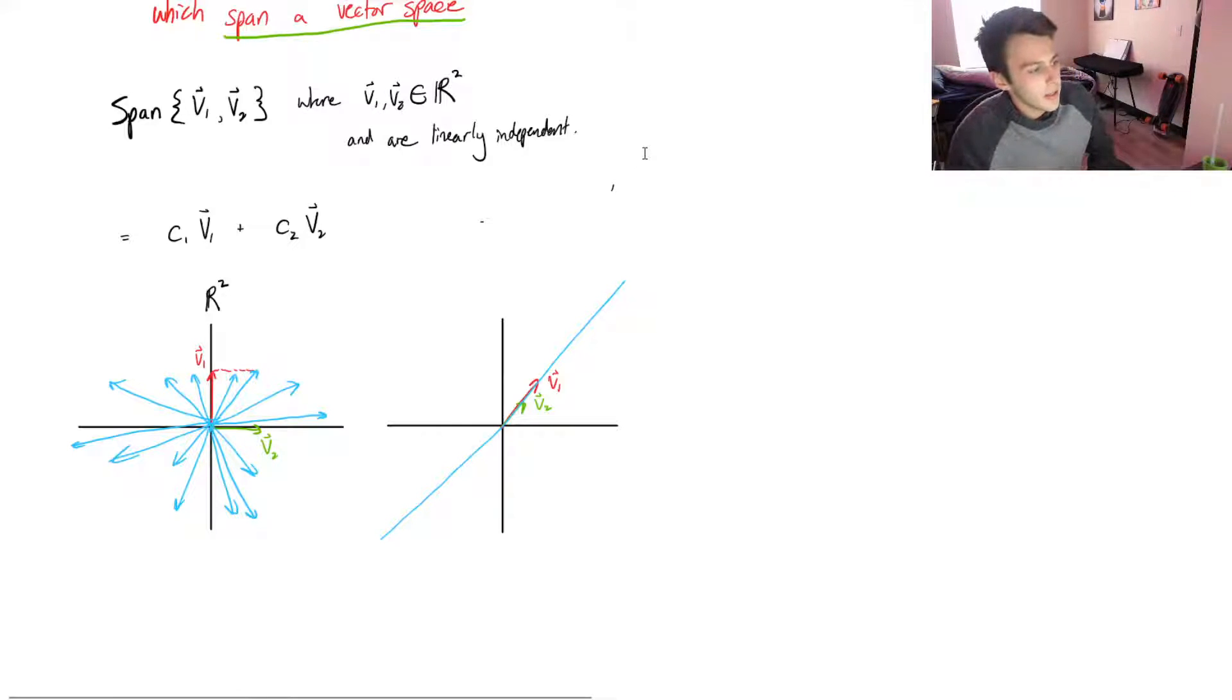So what it means to be a basis, it means that it's the span, it's the set of vectors that if we took the span of that, it would reach every single point in the vector space that we're talking about. So in this case, R². And similarly with R³, this is in my other video on my channel in a bit more detail.